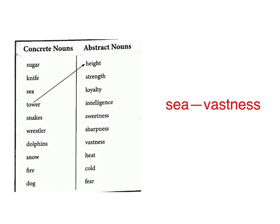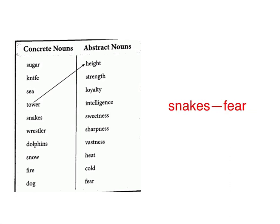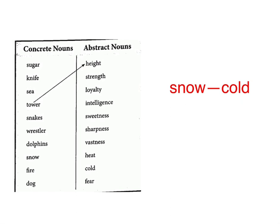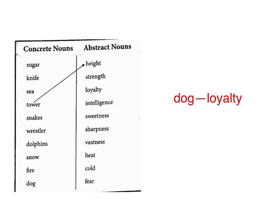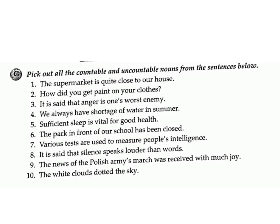Concrete to abstract noun pairs: sugar–sweetness, knife–sharpness, vastness, tower–height, snakes–fear, wrestler–strength, dolphins–intelligence, snow–cold, fire–heat, dog–loyalty. C. Pick out all the countable and uncountable nouns from the sentences below: 1. The supermarket is quite close to our house — countable: supermarket, house.